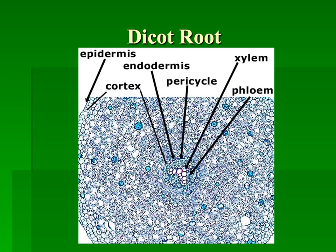When we look at the xylem and the phloem: xylem is red dead — it is typically stained red and these cells are dead. Our phloem are live cells and they stain green. So we can see the red dead xylem and the green phloem. And this is a dicot root.